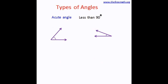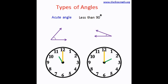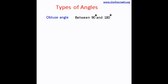Now, what time on the clock shows an acute angle? 11 o'clock. What else? 2 o'clock. You can also think of other times like 1 o'clock — the hands will make an acute angle — or 10 o'clock, it can also make an acute angle.